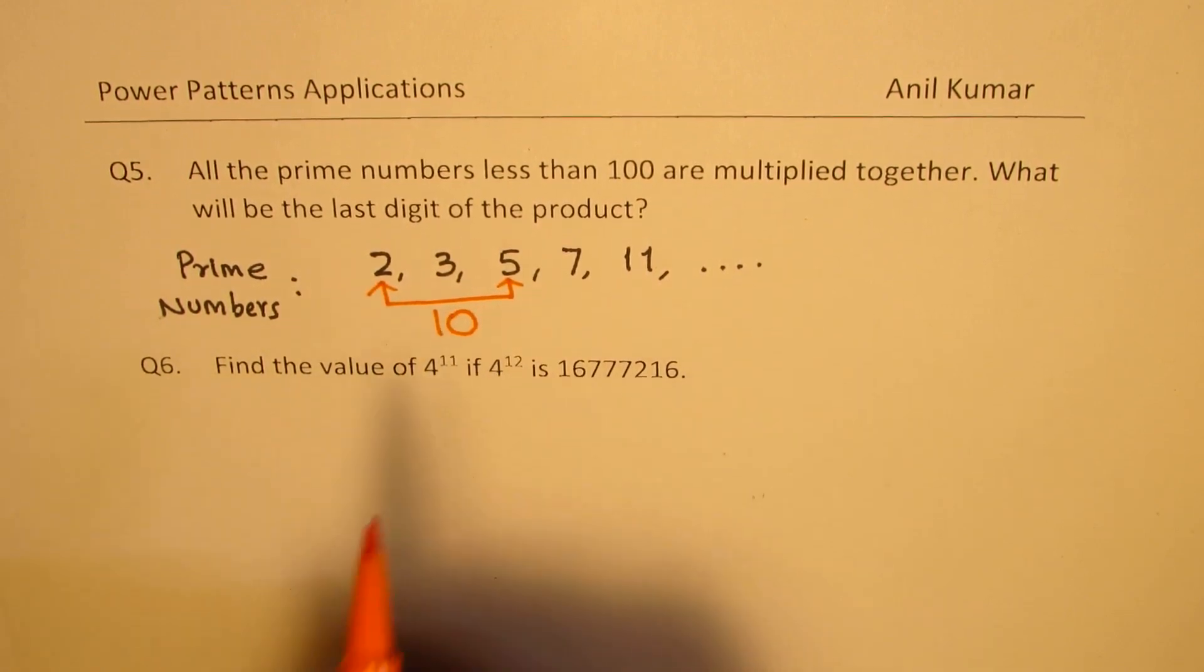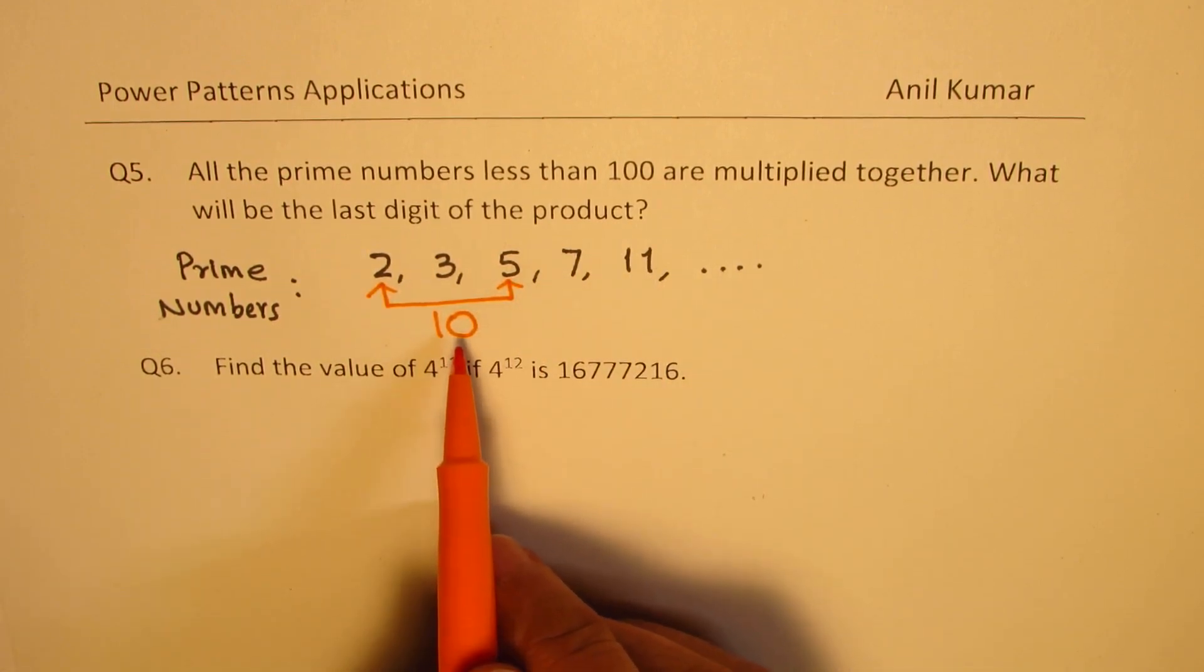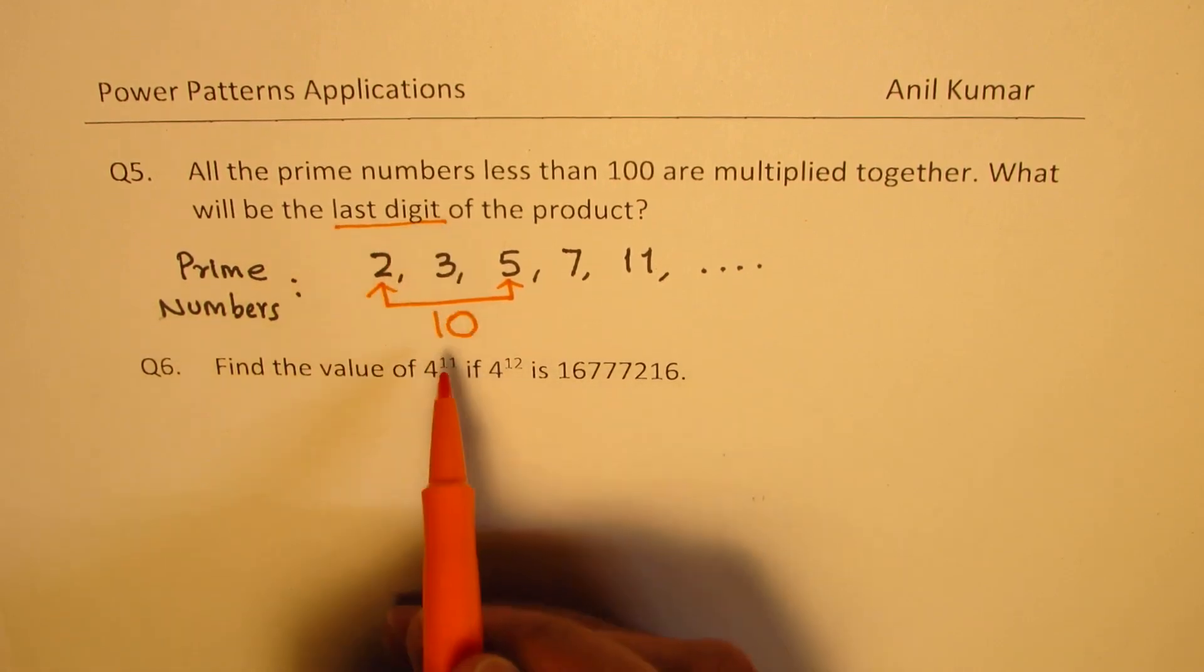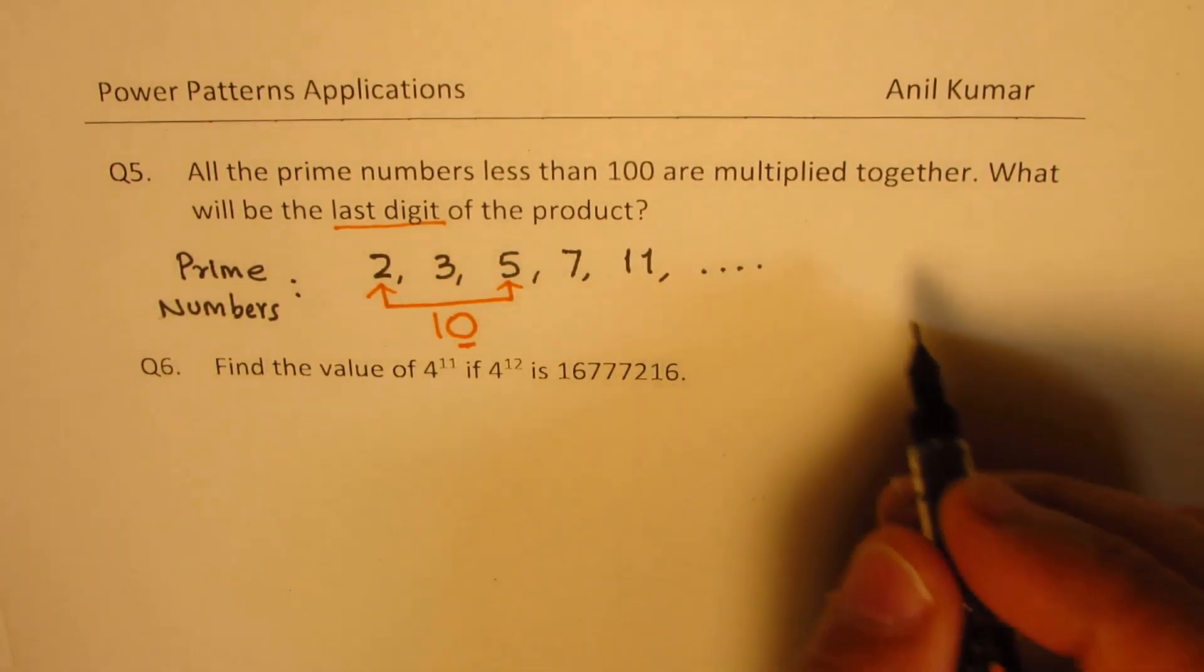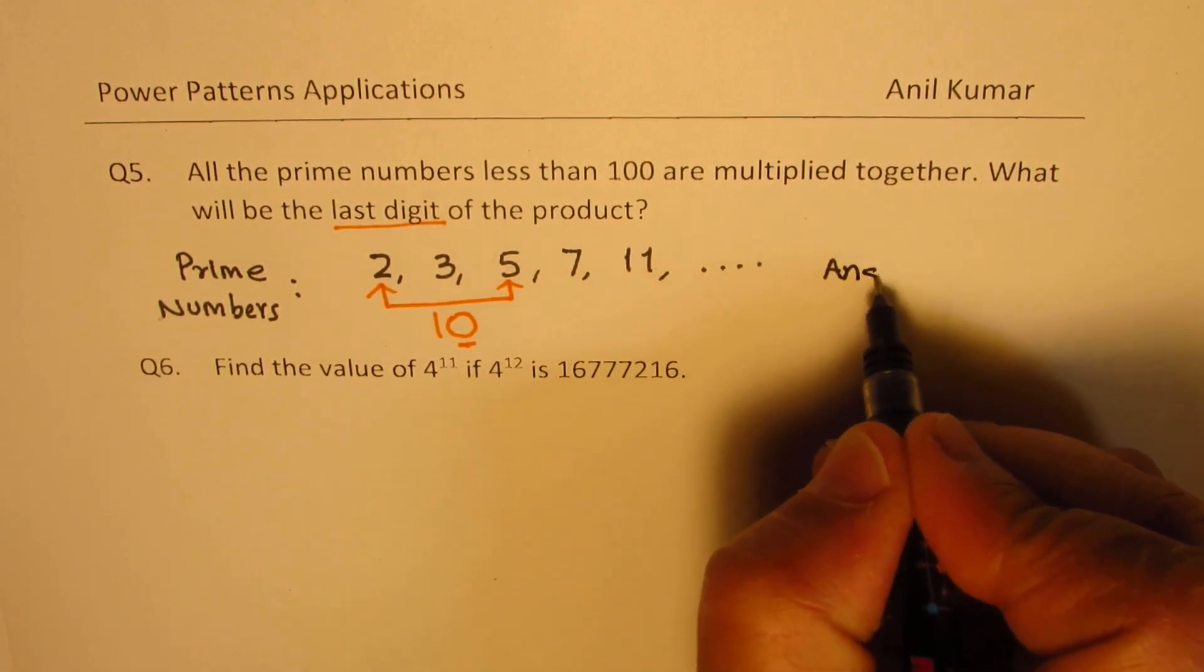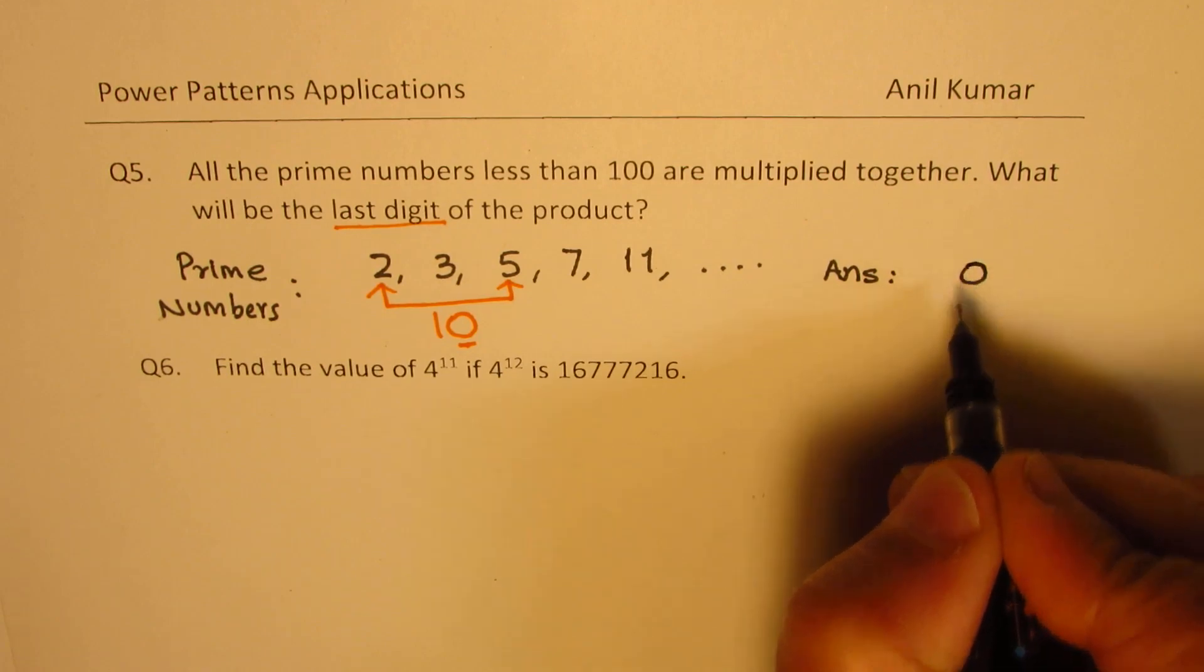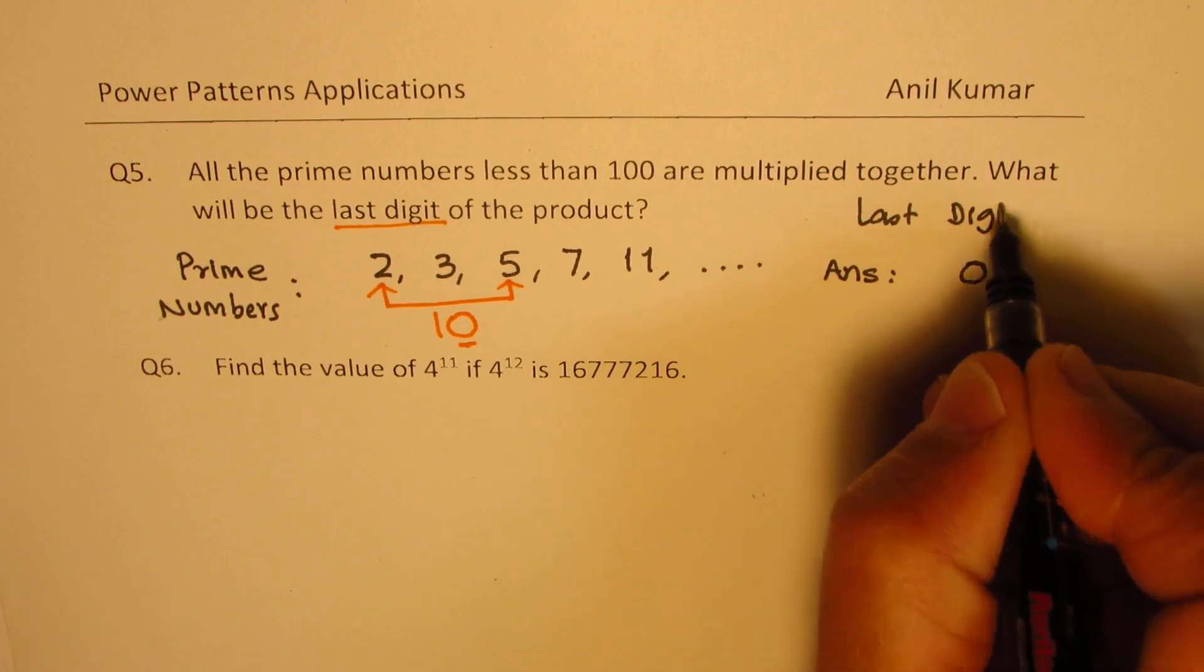And the pattern rule is, if I multiply numbers with 10, in that case for sure, the last digit is going to be 0. So since we are multiplying by 10, 2 times 5, we know that the last digit has to be 0. So our answer here is 0 is the last digit.